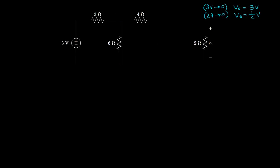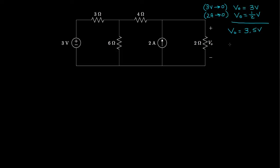Now we can look at the situation when both sources are in the circuit. The total voltage is the voltage obtained when the 3-volt source is set to zero and only the 2-amp source is present — which is 3 volts — plus the voltage obtained when the 2-amp source is set to zero and only the 3-volt source is present — which is 1/2 volt. So the total VO is 3.5 volts. That's an example of how we use superposition to solve for an unknown voltage in a circuit containing two or more independent sources.